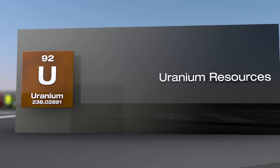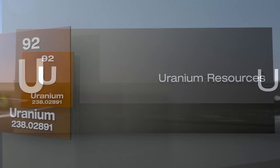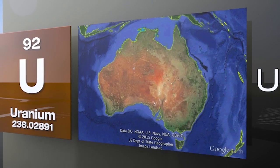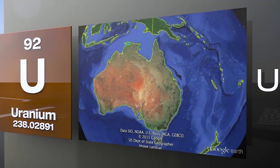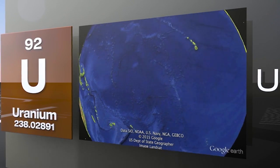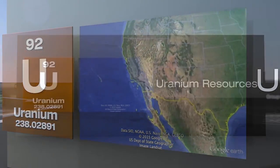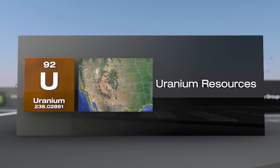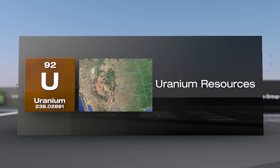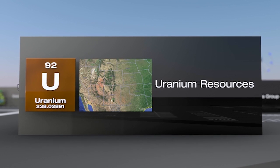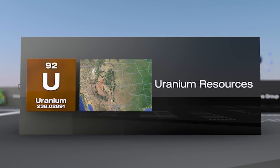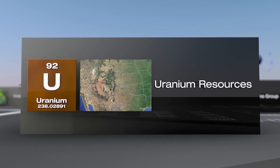General Atomics is a global leader in the mining, milling, and production of uranium used for nuclear fuel. Owning multiple uranium resources throughout Australia, Colorado, and New Mexico, General Atomics Uranium Resources affiliates include Converdyne, Heathgate Resources, Nuclear Fuels Corporation, Rio Grande Resources, and the Cotter Corporation.